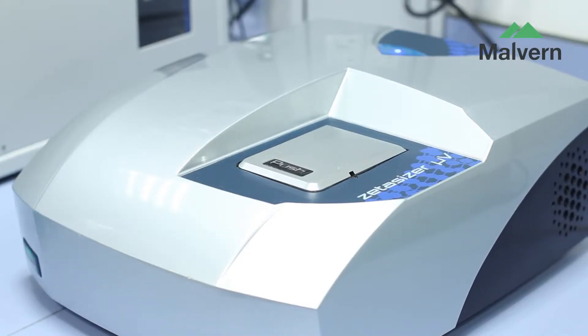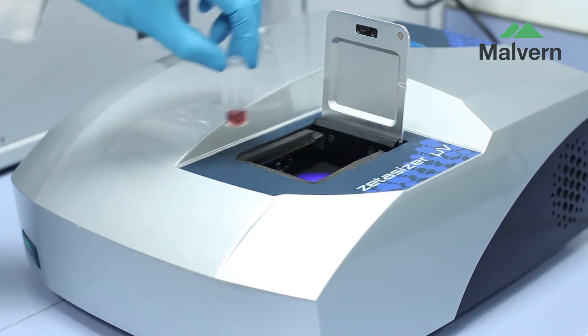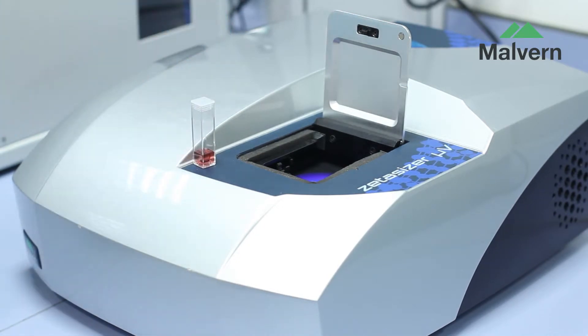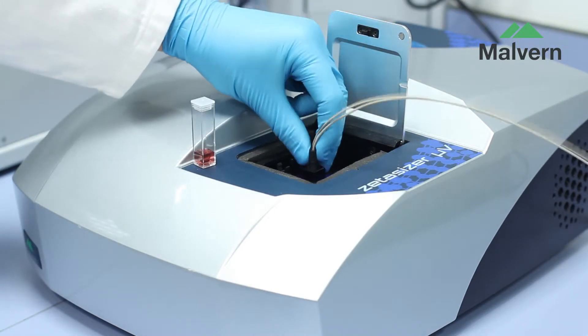Conversion from batch DLS to SEC detector mode could not be simpler or faster. Simply remove the batch cuvette and replace with the low-volume SEC flow cell and close the lid. The system is now ready to run.